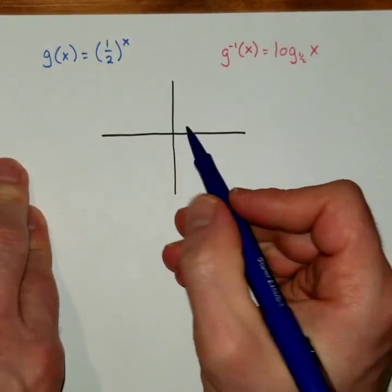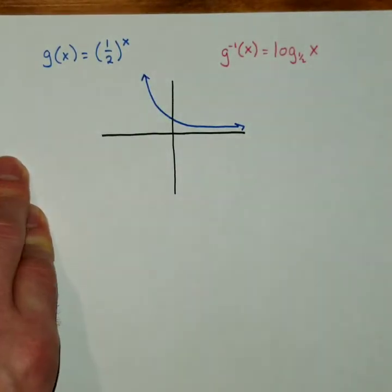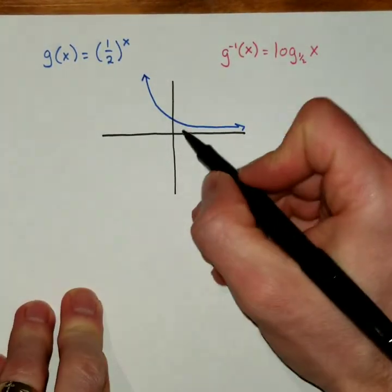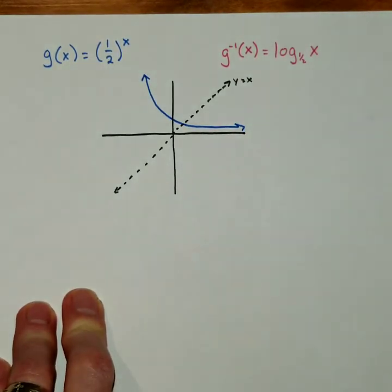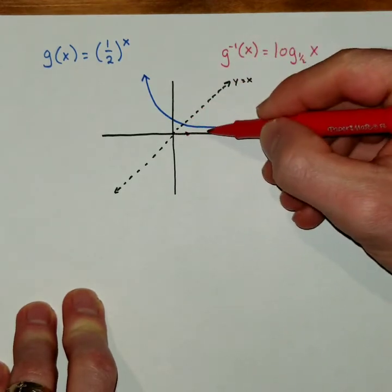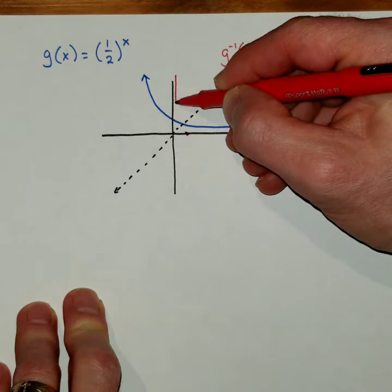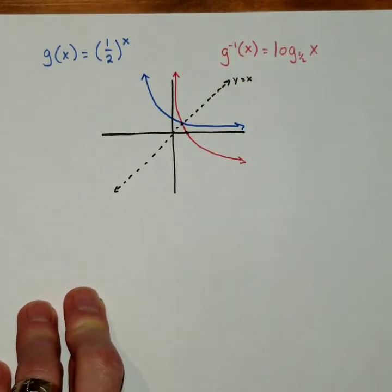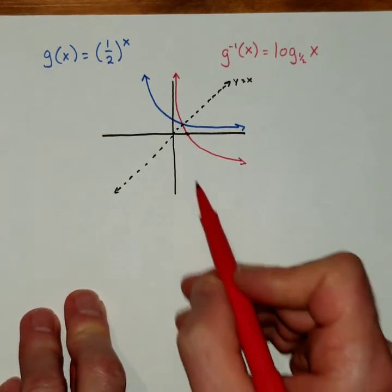The 1 half x we know is an exponential decay. So it's going to be decreasing to the right, because that base is less than 1. Therefore, the logarithm is going to be the reflection of that graph across the line y equals x. So we're going to take our y intercept and make it an x intercept. And then our horizontal asymptote on the positive x becomes a vertical asymptote on the positive y. So now I'm going to sketch my graph. And you should see that they intersect right on the line y equals x.